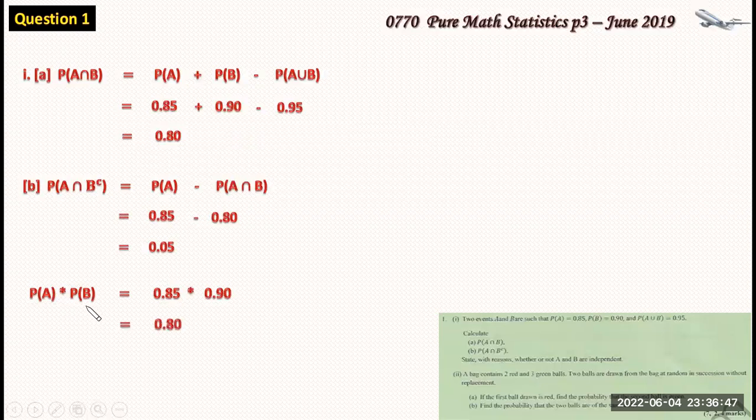So probability of A times probability of B is 0.85 times 0.9. And that gives us 0.80, which is equal to the probability of A intersection B that we calculated above. So we conclude that these events A and B are independent.